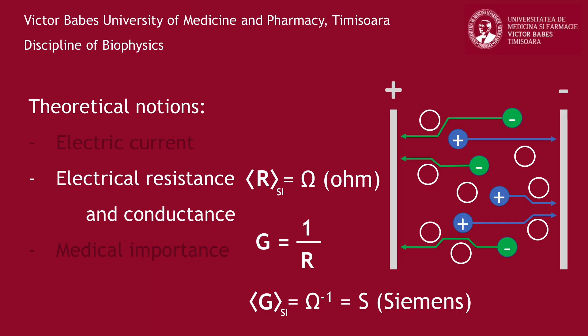Since electrolytes dissociate into ions when dissolved in polar solvents, their presence and concentration alter the electrical conductance of the solution they form.